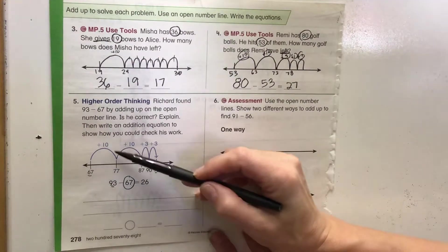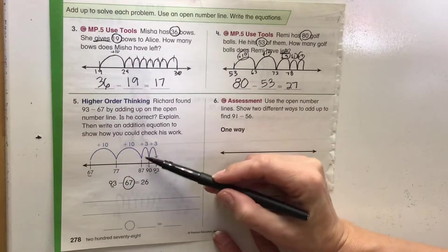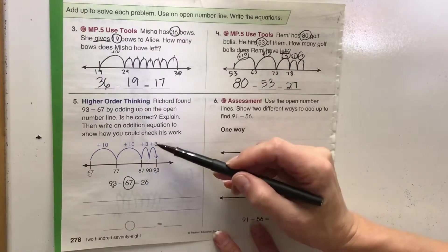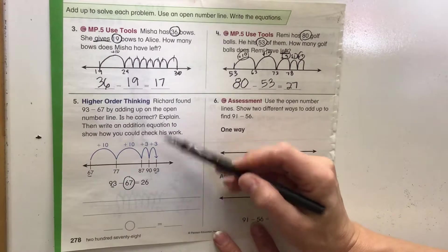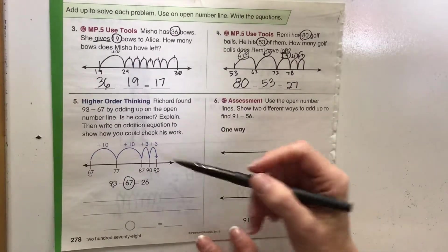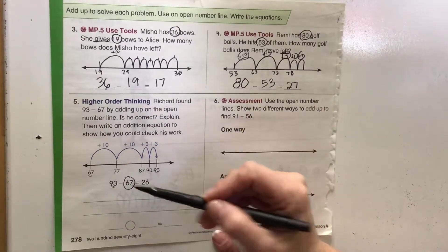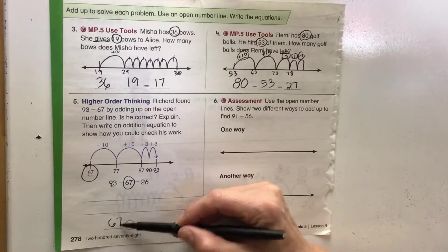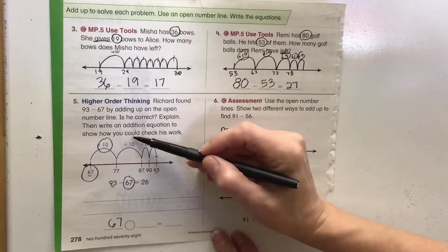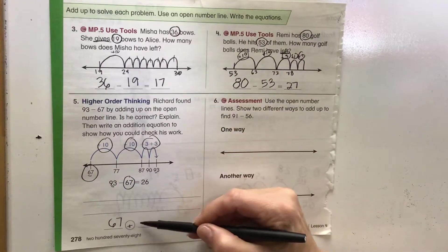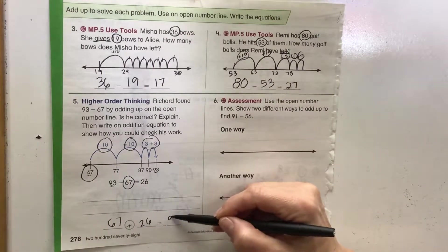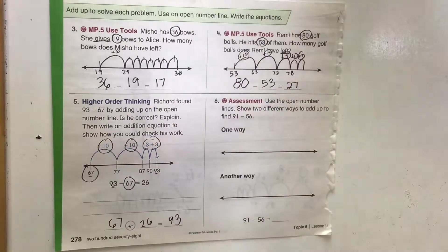67 plus 10, 77 plus 10, 87, plus 87, 88, 89, 90 plus three more: 91, 92, 93. Yes, that works. So an equation that we could put together, we could add them together: 67 plus 10... 26 equals 93.